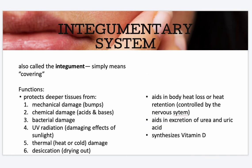Welcome to your integumentary system, also called integument, which simply means covering. Its function is to protect deeper tissues from mechanical damage, chemical damage, bacterial damage, UV radiation, and thermal desiccation. It also aids in body heat loss or heat retention, excretion of urea and uric acid, and synthesis of vitamin D. Basically, it's a covering that protects you from anything foreign outside the body.